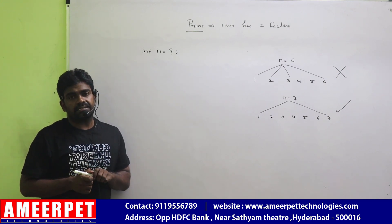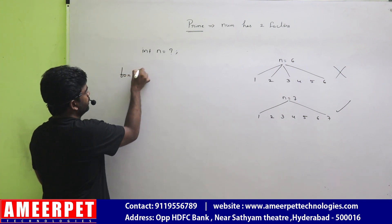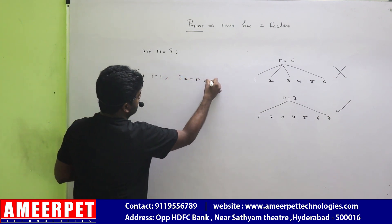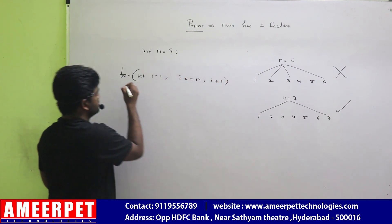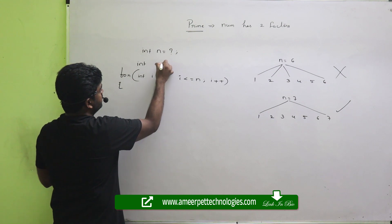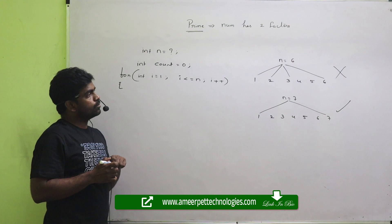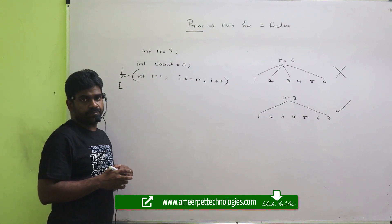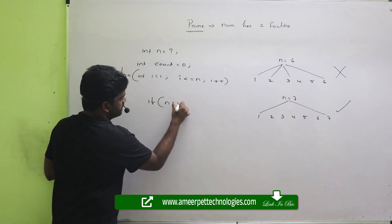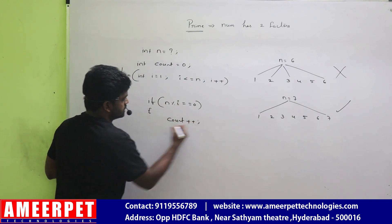So we need to count how many factors are present for the given number. We repeat the loop from i equals one to n, i++. Here we initialize int count equals to zero. We are just counting how many numbers divide n. If the number n is divisible by i, just increase the count value — count++.